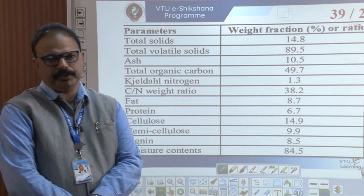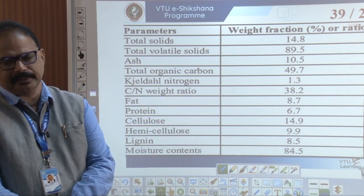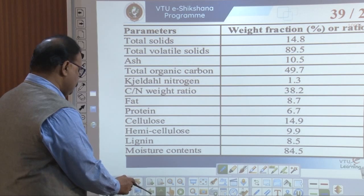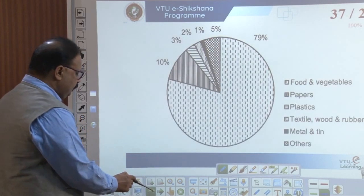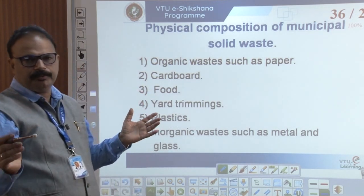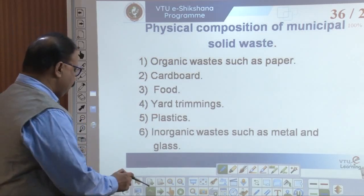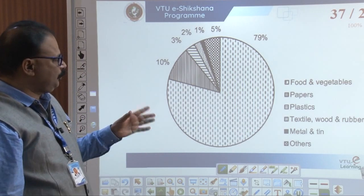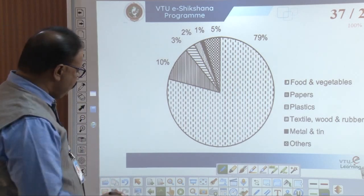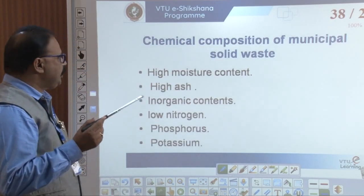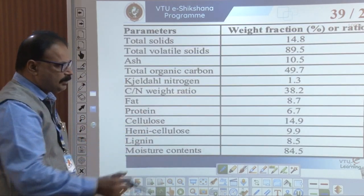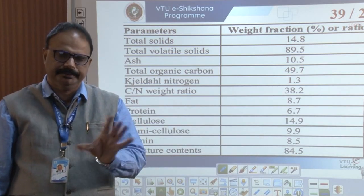These are the different physical and chemical composition parameters of municipal solid waste. Physical composition includes paper, cardboard, food, and other materials separated by percentage weight. Food and vegetable waste are the major component at the highest percentage. Chemical composition shows high moisture content, high ash inorganic content, and low nitrogen, phosphorus, and potassium — all expressed as weight fractions.